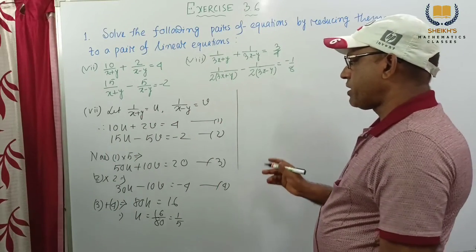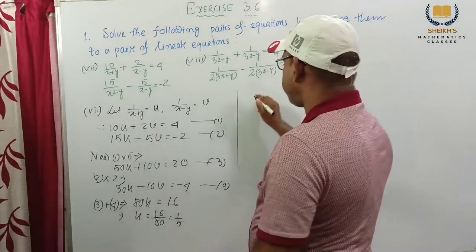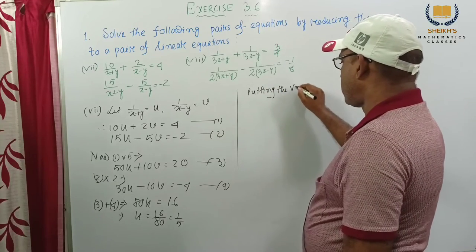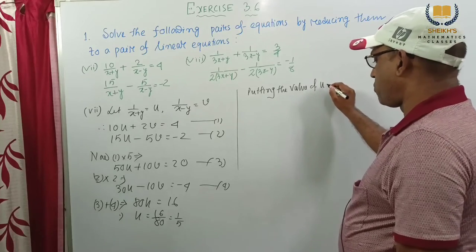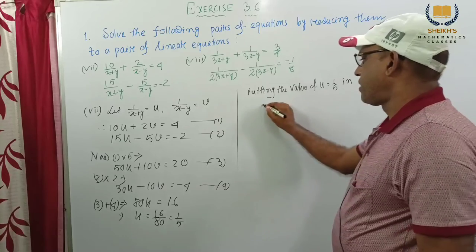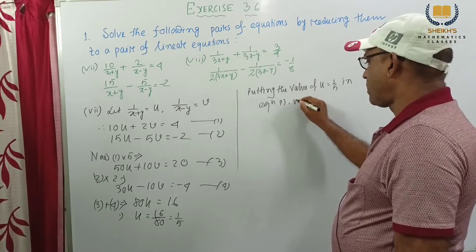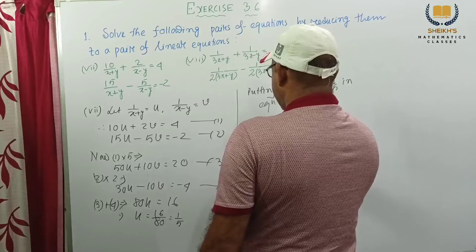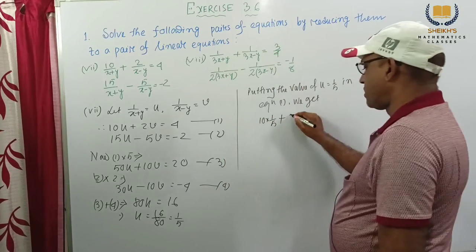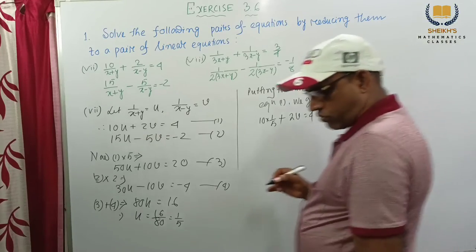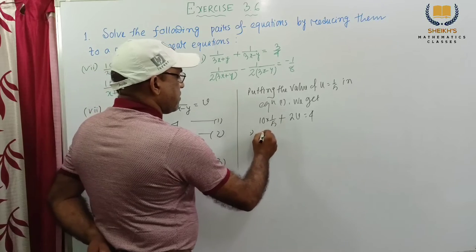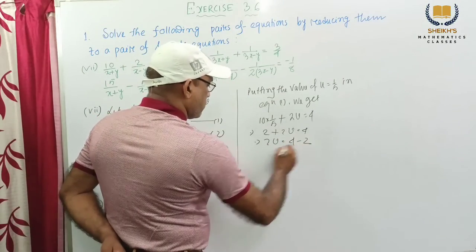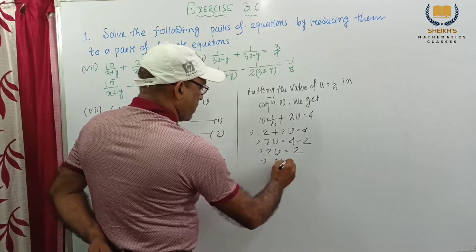Now putting the value of u equal to 1 by 5 in equation 1. So here we are putting u equal to 1 by 5: 10 into 1 by 5 plus 2v equal to 4. If we cancel, we get 2. So 2 plus 2v equal to 4. Twice v equal to 4 minus 2. Twice v equal to 2, and v equal to 1. Therefore u equal to 1 by 5, v equal to 1.